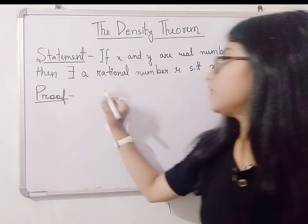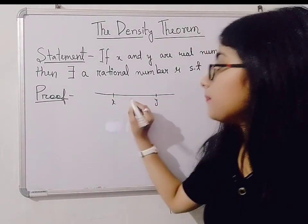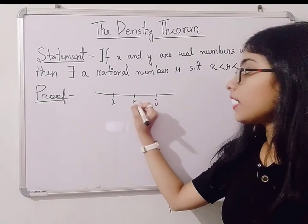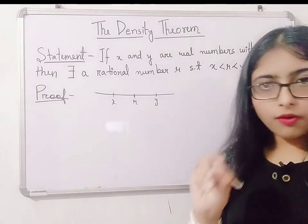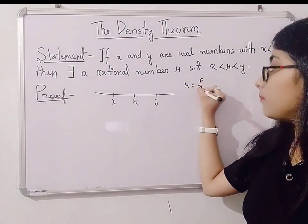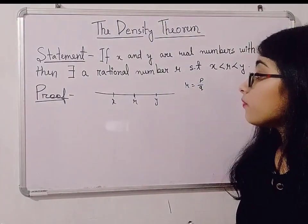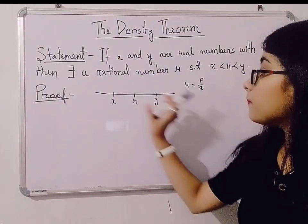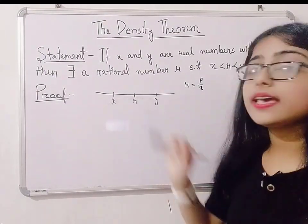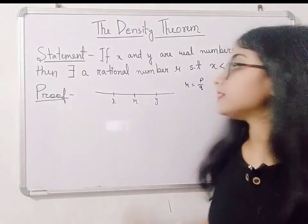So this is the value of y and this value of x. So there will be at least one rational number within them. Now we know the rational number, what is the form? The form of rational number is p by q form. So we have to prove that there is a number between these two numbers, it exists in x and y. So we have to prove this and this is the density theorem.